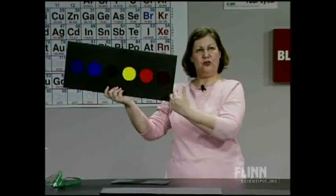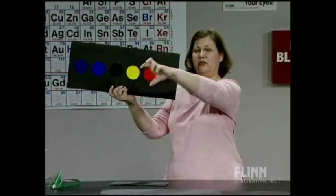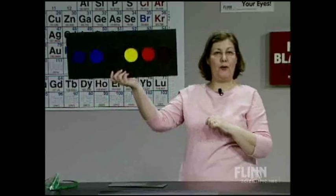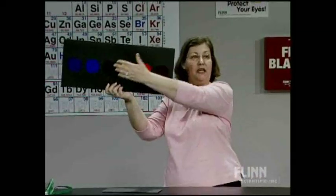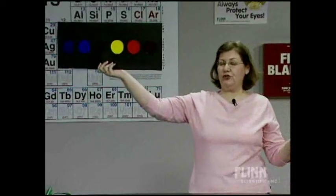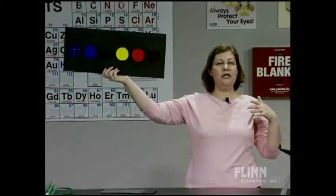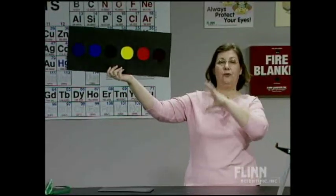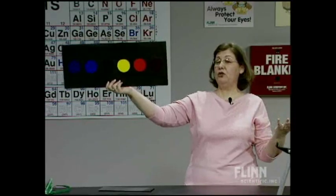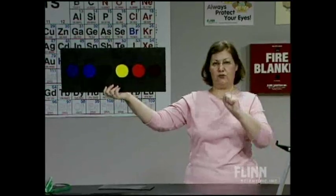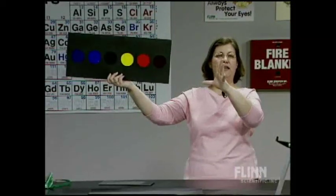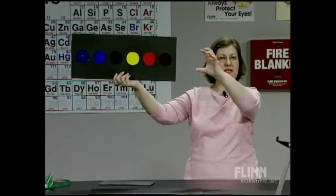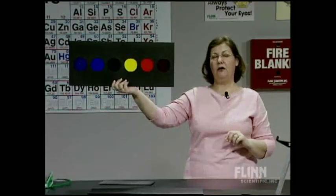Some students might say: the light goes through circular openings, so I'm going to get little circles of light that glow in the dark. Another possibility: equal glowing on all of them. Or maybe only some filters let enough light through — perhaps the red and orange. The yellow is really bright, so yellow should let plenty of light through and I should only see a glow under the yellow.